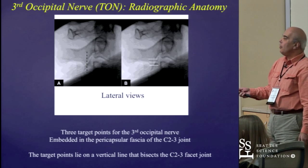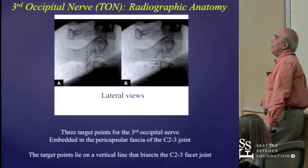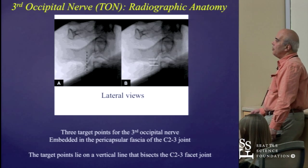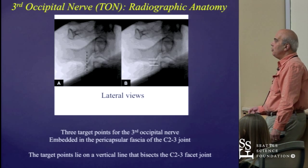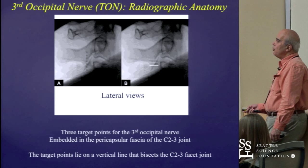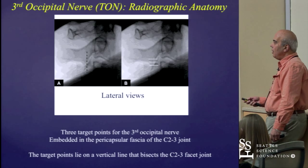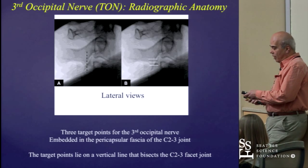The third occipital nerve, as mentioned before, provides innervation to the C2-3 facet joint. There are usually three target points for the third occipital nerve block, embedded in the pericapsular fascia of the C2-3 facet joint. These points lie along a vertical line that bisects the C2-3 facet joint itself, as shown in the image indicating the three points where needle placement for the third occipital nerve blocks should be placed.